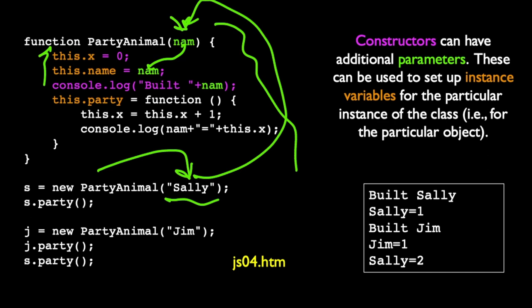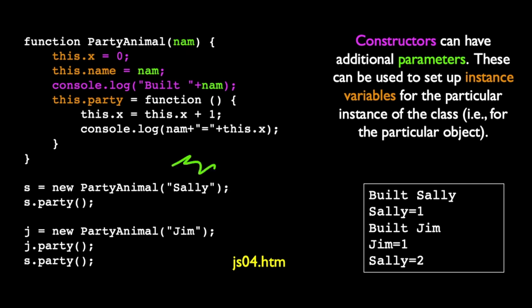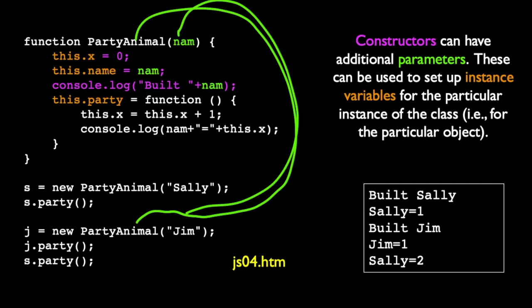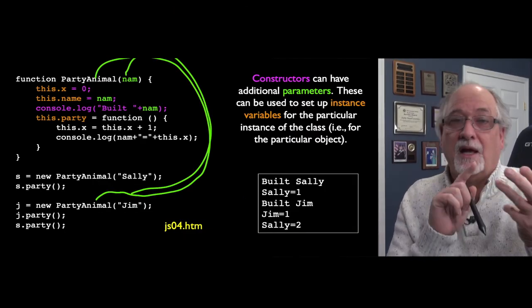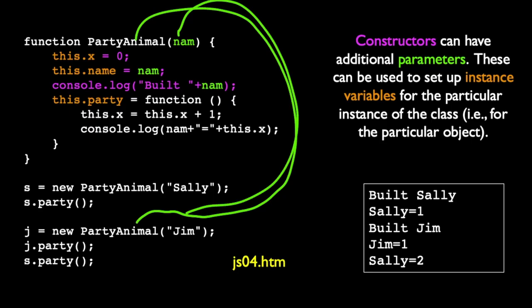When we run this, it comes in, it constructs Sally, setting that and it says build Sally, that's that nam. And then we call Sally s.party. So the actual object is in the variable s. We call s.party and this.nam is Sally and it's equal to one. And then we make a new one. We're going to make a new one but this one will be called Jim. So we make a second variable, a second instance variable. It's going to be a second copy of x and a nam and actually a copy of party. And so then it will say built Jim. And then we say j.party and then we set Jim to one. And then s.party and that sets Sally to two. And so now the j variable and the s variable are completely independent variables.